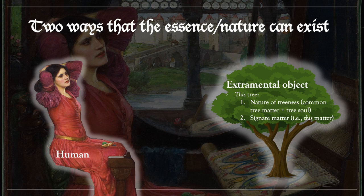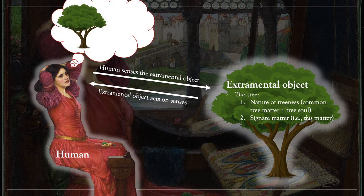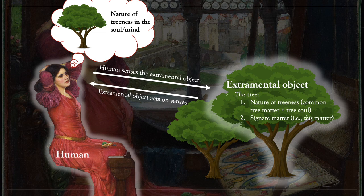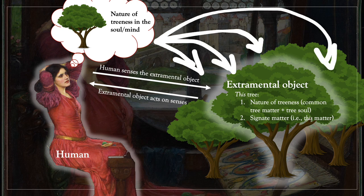Now suppose that there is some human sitting and looking at the tree. The extramental object acts on the senses of the human. Likewise, the human senses, or sees, the extramental object. From these sensible impressions, the human is capable of producing the concept of treeness in general. Here we have the nature of treeness in the soul, or in the mind of the human. Thus now we have two ways in which tree nature can exist: one in the extramental object, and one in the mind or in the soul of the human. This object in the mind corresponds to many individuals outside the mind. We can predicate 'tree' of this tree, that tree, and some other tree, because the concept applies to all of them insofar as it does not determine signate matter, but only determines the common tree matter and tree soul.